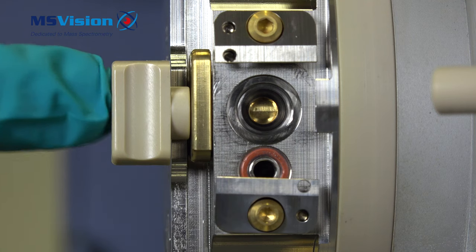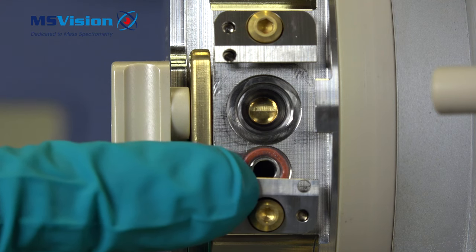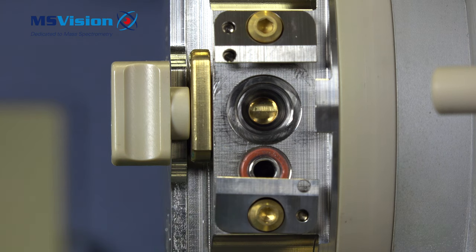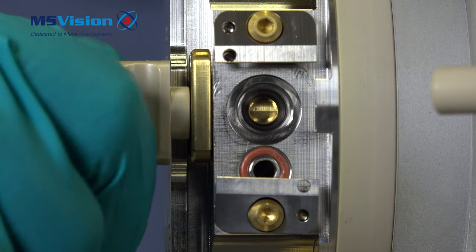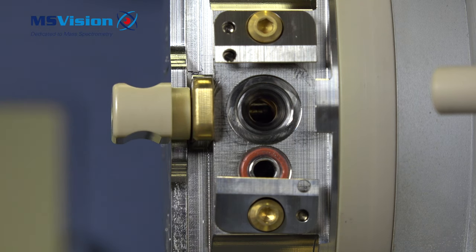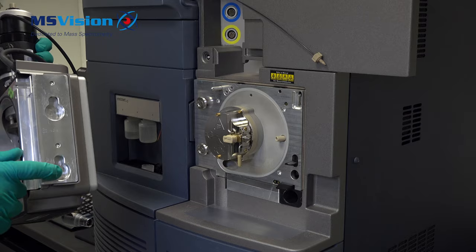You can see the isolation valve here is closed. This closes off the vacuum so that you can remove the cone after cleaning without venting the system. In this position you can see it's fully open. Do not do this when the system is under vacuum because your turbo pumps will be heavily stressed and may become damaged.